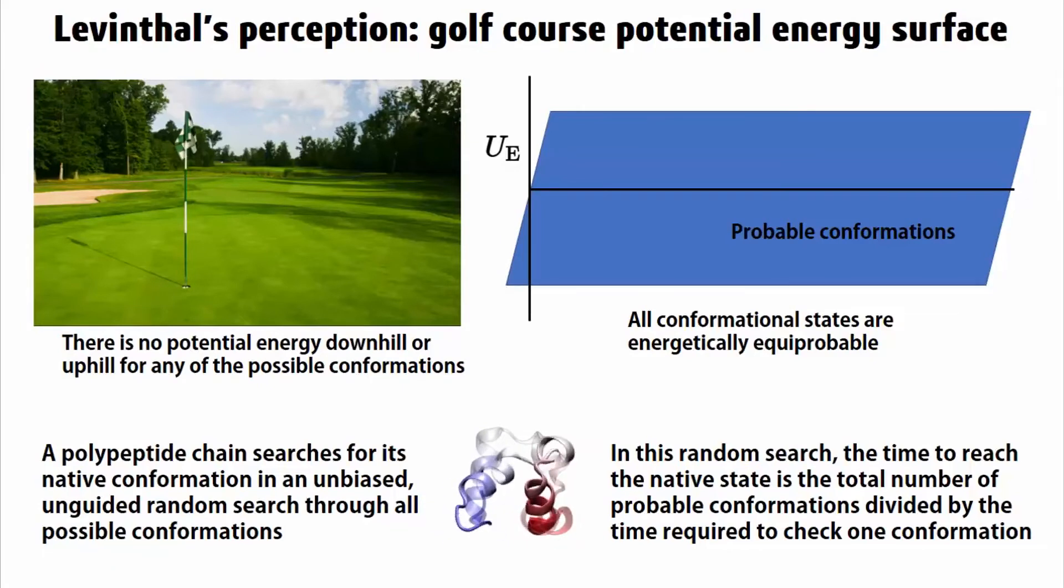If there is no loss or gain of free energy for transition between any two states, a search to find the native structure would be completely random. In a random search, the time to reach the native state is given by the total number of probable conformations divided by the time required to check one conformation. This time can be insanely large.